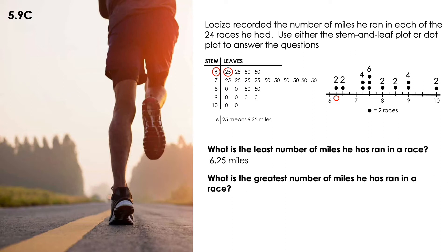What is the greatest number of miles he has run in a race? In the stem-and-leaf, the stems are 6, 7, 8, 9, and 10. Which one is the greatest? 10. And there's only one value in the leaves for that stem. Now looking at the dot plot, it's all the way to the right side — 2 races at 10 miles. So my answer is 10 miles.